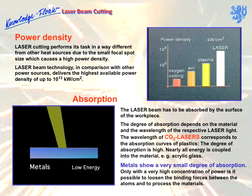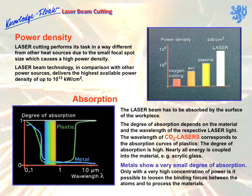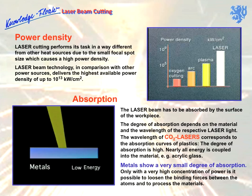Metals are a completely different matter. The surface refuses to cooperate — normally, almost the entire beam is reflected. The diagram explains why: the degree of absorption for metals is low, especially at the wavelength of the powerful CO2 laser. Only with a very high concentration of power is it possible to loosen the binding forces between the atoms and process the materials.